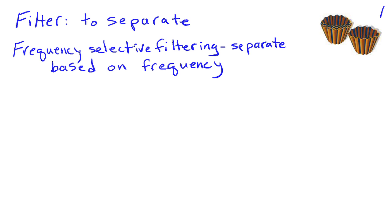You can think about a coffee filter, which separates the water from the coffee grounds. But when we're doing frequency-selective filtering, we're separating signals based on their frequency content.